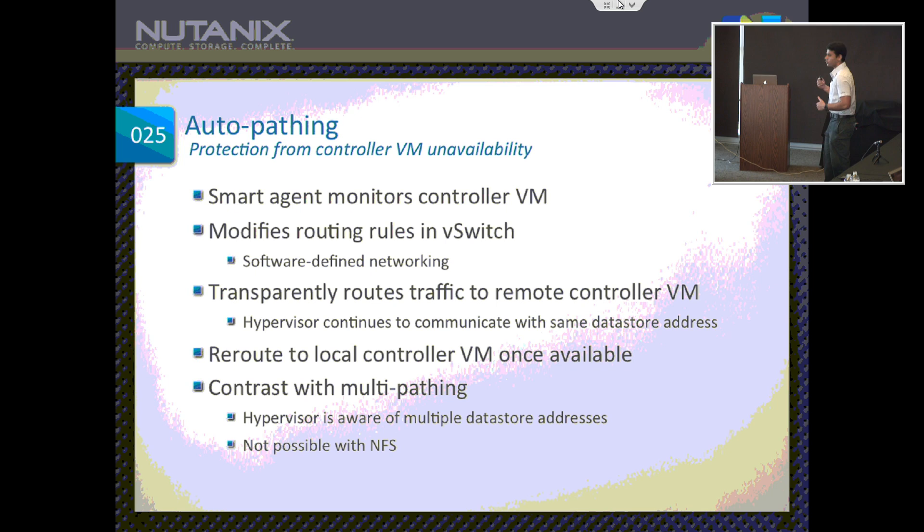I want to contrast this with multipathing. In the context of SCSI, multipathing means you have multiple addresses known to ESX, and if one goes down you can go to the other. In this case, for NFS, there is only one address, and we transparently make sure that address is always alive. That's why we call it auto-pathing.